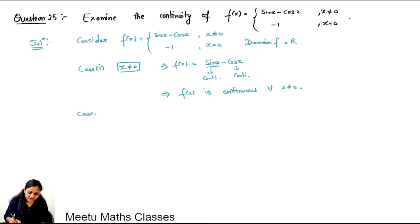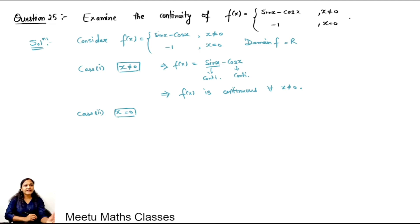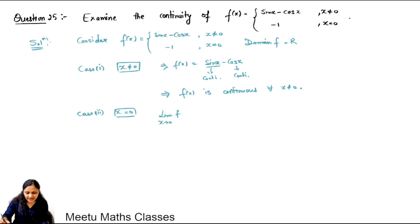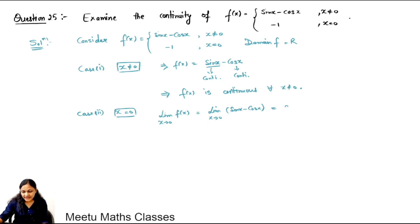We now check continuity at x equals 0. The limiting value of the function as x tends to 0 is sin x minus cos x. By direct substitution we get sin 0 minus cos 0, which is 0 minus 1, that is minus 1.